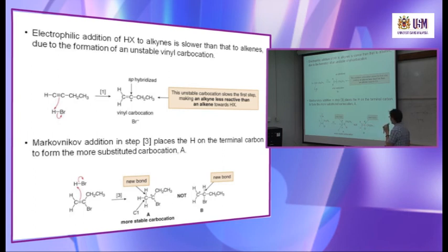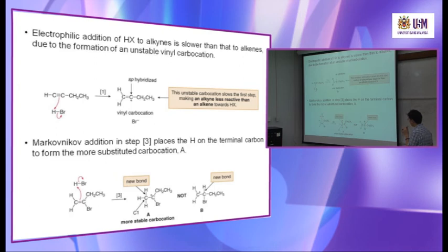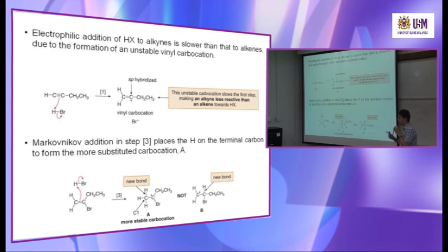Electrophilic addition of HX to alkyne is slower than that to alkene due to the formation of the unstable vinyl carbocation. Markovnikov addition places H on the terminal carbon to form the more substituted carbocation — if H added to the internal carbon, the resulting carbocation would be less substituted, so that is less favored.